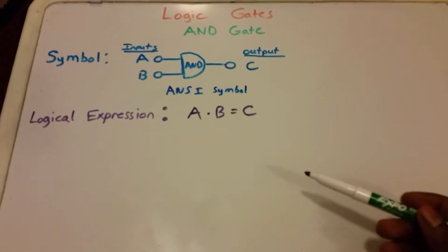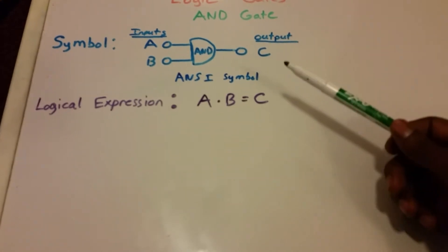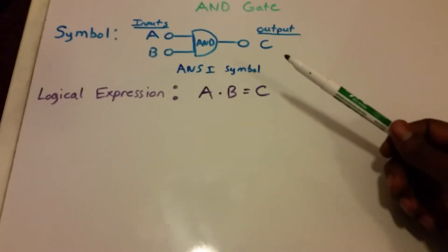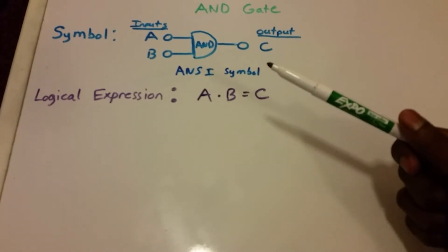Hey guys, and welcome to this video on logic gates. Specifically, we want to talk about the AND gate. The AND gate is a digital logic gate with two or more inputs and one output that performs logical conjunction.